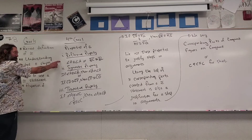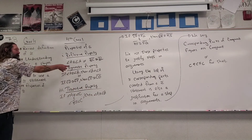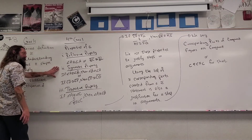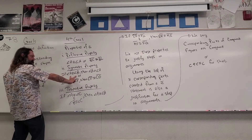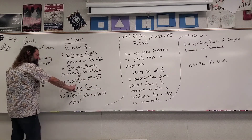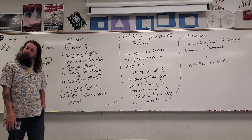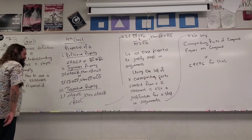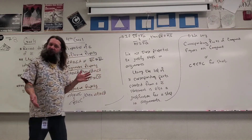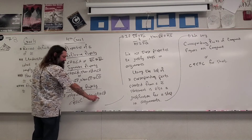The reflexive property of congruence says that you're congruent to yourself — angle A is congruent to angle A, side BC is congruent to side BC. The symmetric property of congruence means if angle A is congruent to angle B, you can switch the order and say angle B is congruent to angle A. Same with side lengths: side CD congruent to side EF means side EF is congruent to side CD. The transitive property is the one we'll use in proofs: if angle A is congruent to angle C, and angle B is congruent to angle C, then angle A must be congruent to angle B.